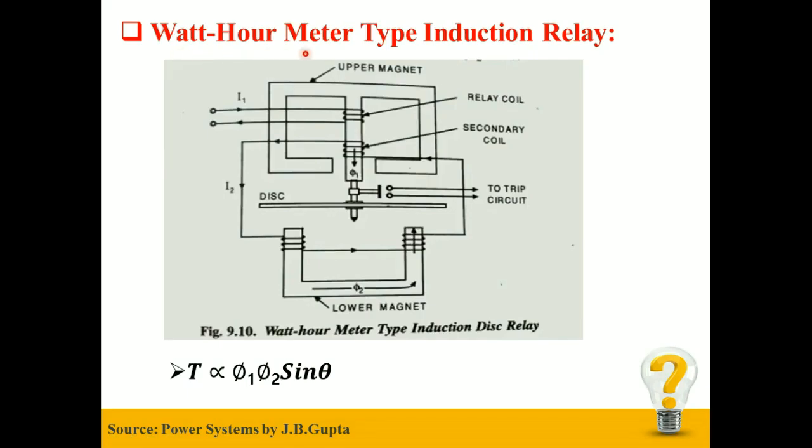Watt-hour Meter Type Induction Relay: it has an E-shaped and U-shaped electromagnet with a disc free to rotate in between them. This disc is generally made up of aluminum, so it has low inertia, therefore needs less deflecting torque.